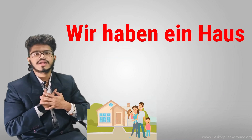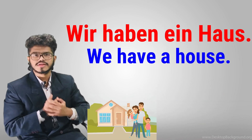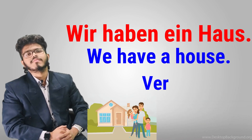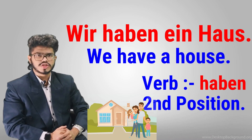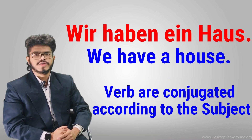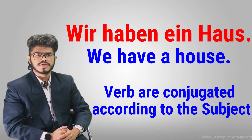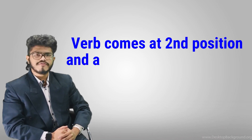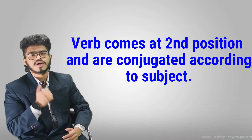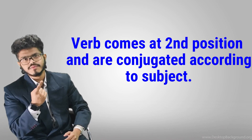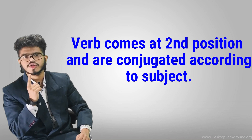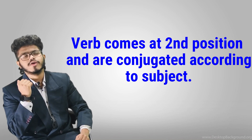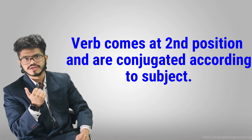Wir haben ein Haus. The verb 'haben' is at the second position and is conjugated according to the subject. So, most of the time, the verb comes in the second position and is always conjugated according to the subject.